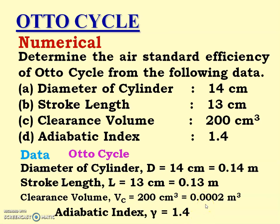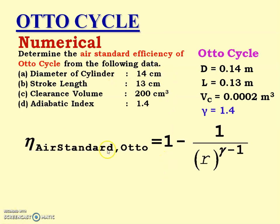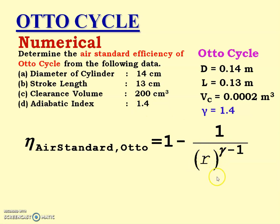We have to calculate the air standard efficiency of the Otto cycle. The efficiency equation is: 1 minus 1 upon R raised to the power (gamma minus 1). We require two values: R, the compression ratio, and gamma. They have given gamma = 1.4, but they have not given R, so we have to first find the value of R.